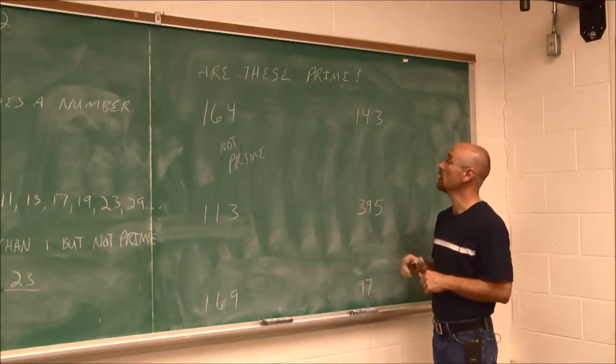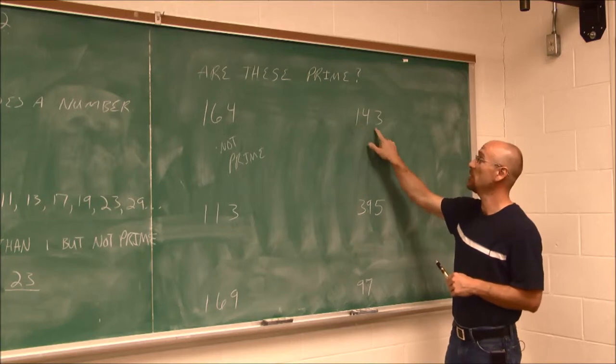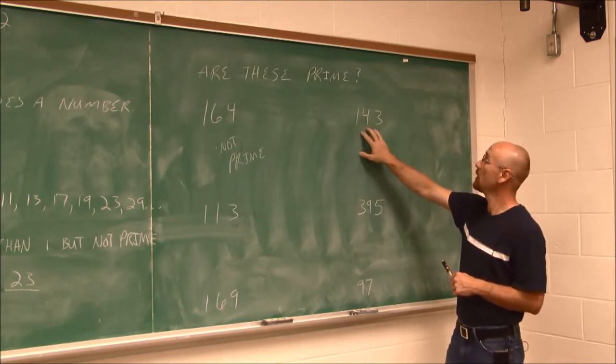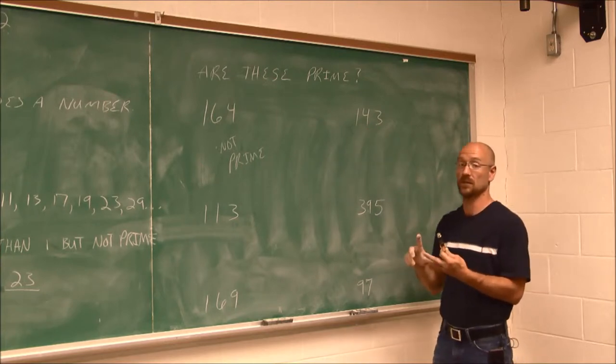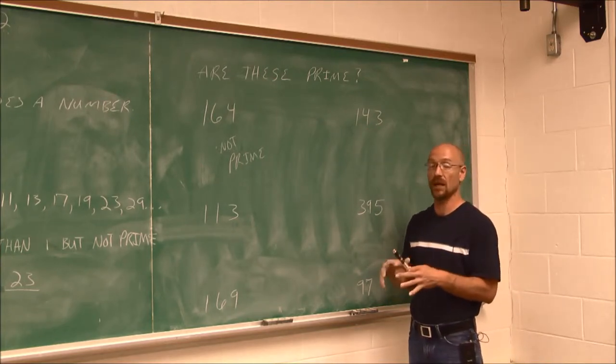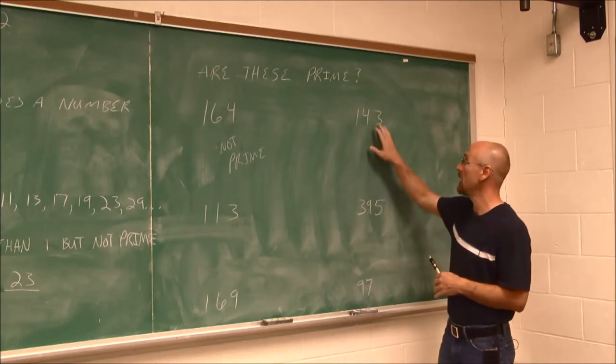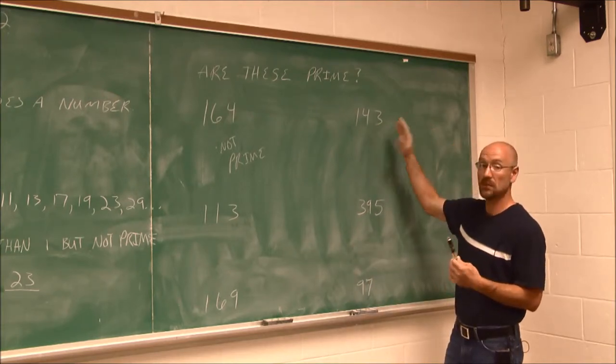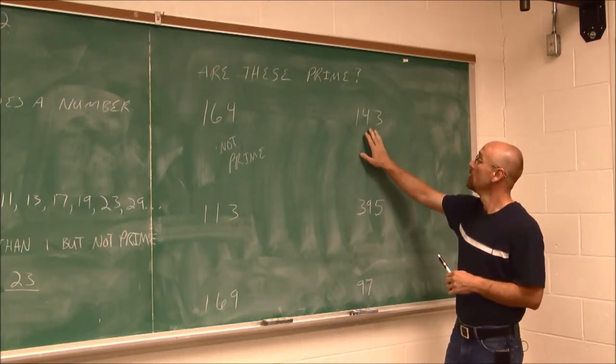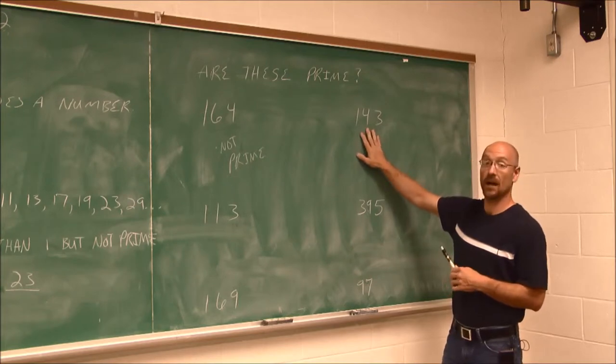If we look at this number here, 143, that's a relatively large number. And if I look at it, I say, well, it's not divisible by 2, which means it's not divisible by 4, or 6, or 8, or any even number. It's not divisible by 2. So that eliminates a lot of the possibilities.